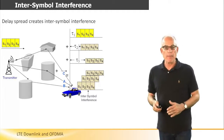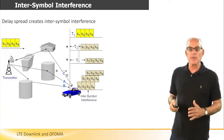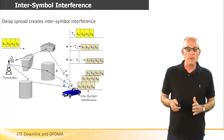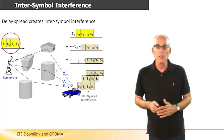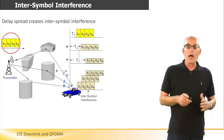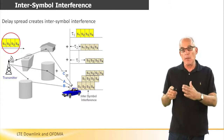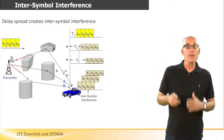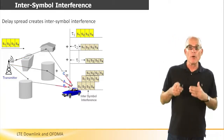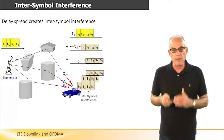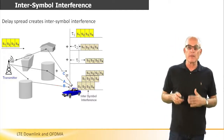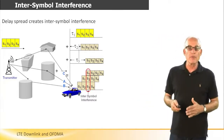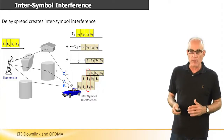Let's see now how delay spread and multipath create inter-symbol interference. The transmitter in this figure transmits a series of symbols S1, S2, S3, and S4. These symbols are propagated through three possible paths — A, B, and C — and they are received in the receiver, in the car, overlapped on each other. So at certain points, multiple symbols are being received simultaneously. This is inter-symbol interference.